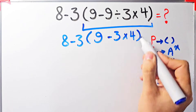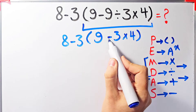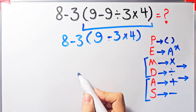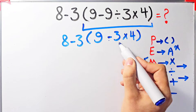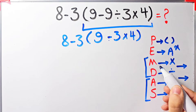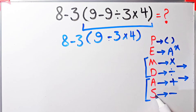Again we simplify the parenthesis. Inside the parenthesis we have subtraction and multiplication. First we simplify the multiplication because multiplication has higher priority than subtraction.